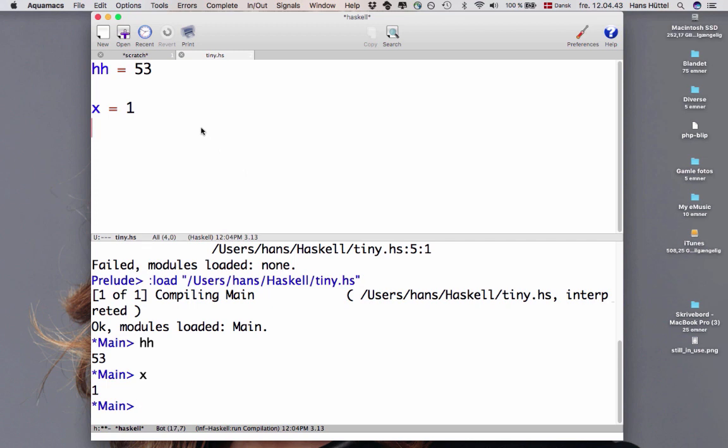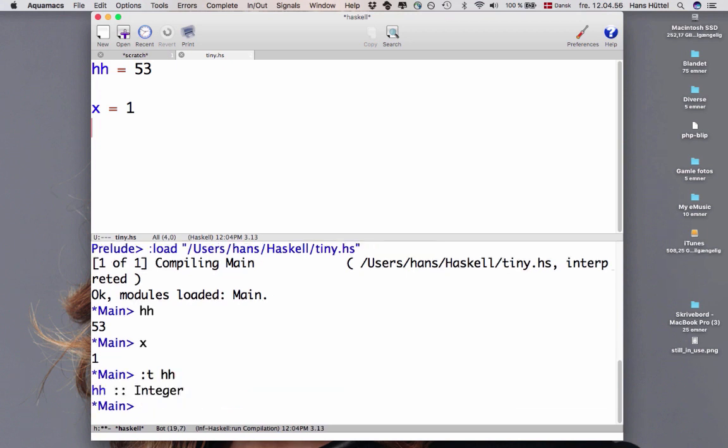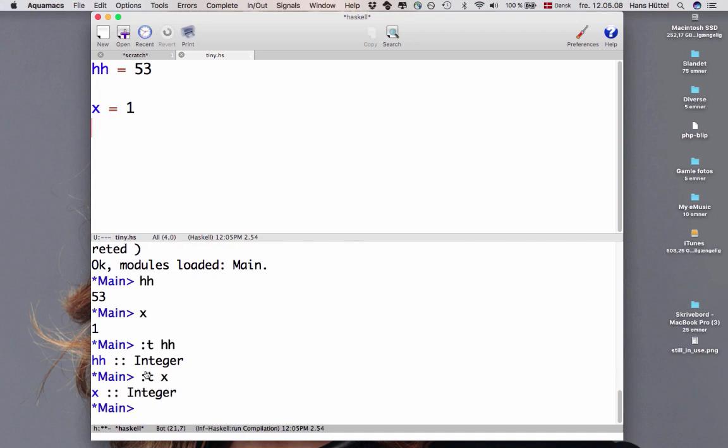Let's return to the program that we already know. We can find out what the type of hh is by typing in the interpreter colon t hh and then we're told that hh has type integer. What's the type of x? We can find out by the same query. x has type integer.